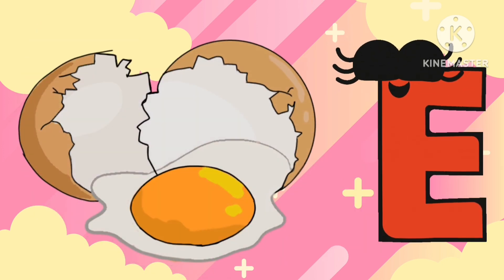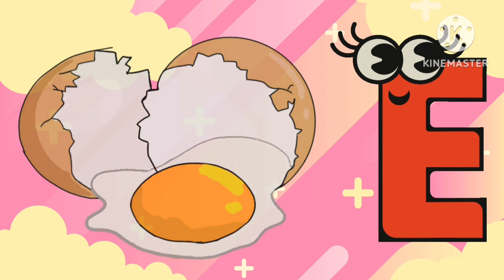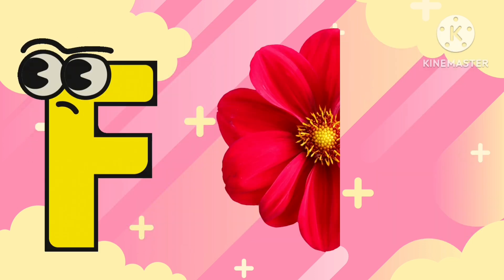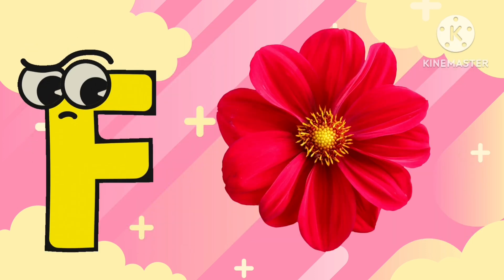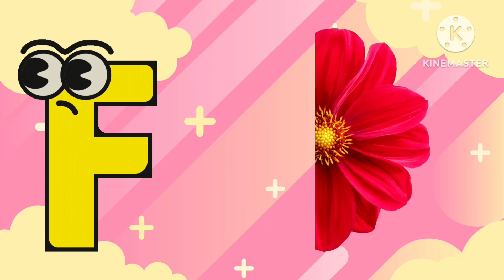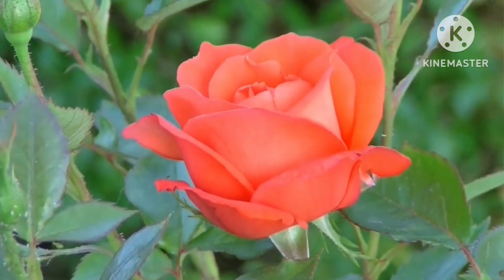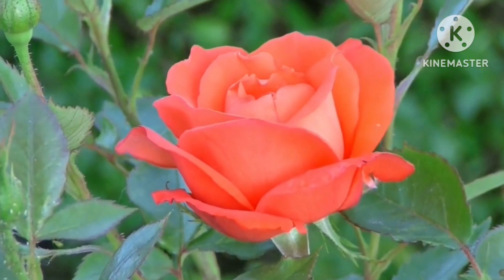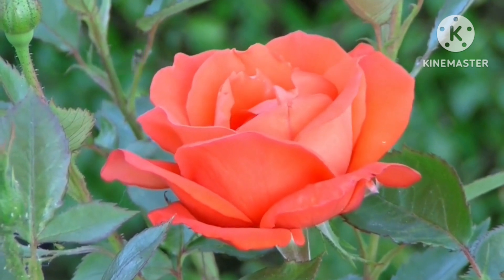E is for egg. F is for flower. Lovely red color flower. Look, this is a rose.